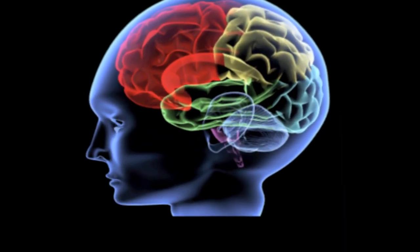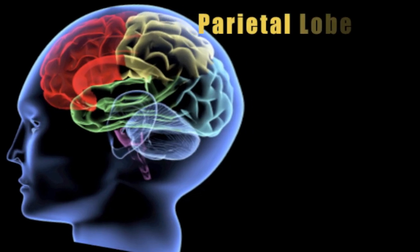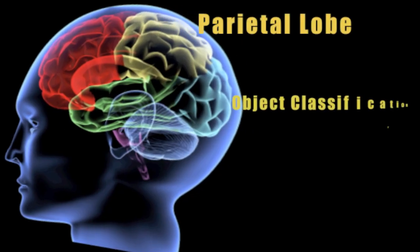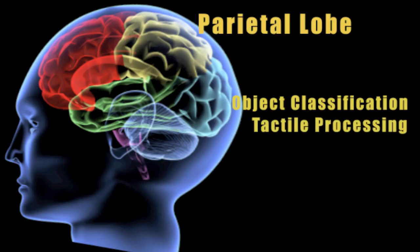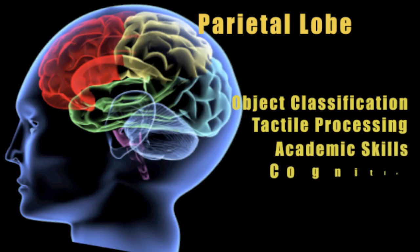The parietal lobe is an area of the brain that takes us into a higher level of functioning. Looking at the changes we see in patients with traumatic brain injury, there is difficulty naming objects and problems processing tactile sensations — problems understanding what their fingers are telling them they're touching. Academic skill sets fall, and things easily done in the workplace or academic setting, from a cognitive standpoint, are now diminished or gone.